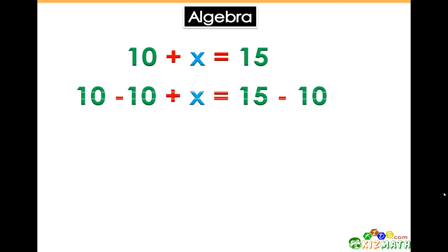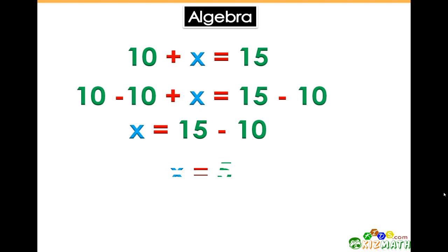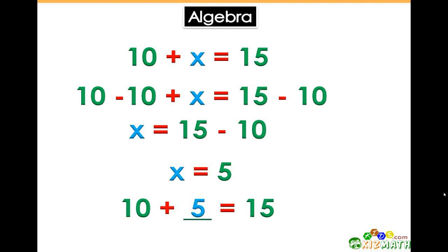To do this, let's first subtract 10 from both sides of the equal sign. This gives us x equals 15 minus 10, or x equals 5. To see if we're correct, let's put this back into the equation: 10 plus 5 equals 15.